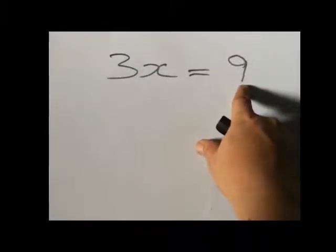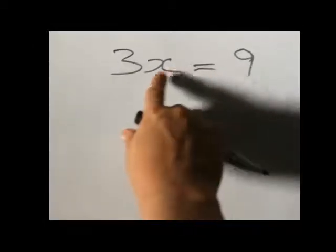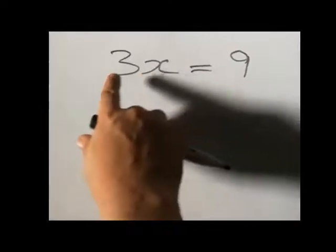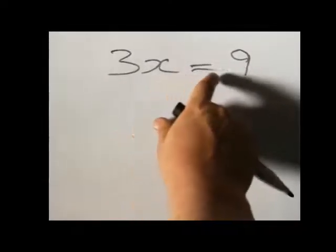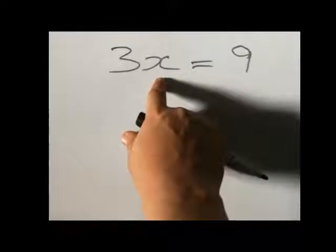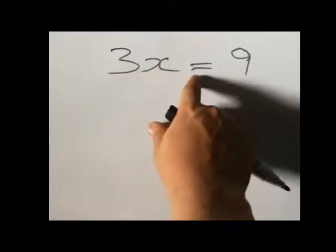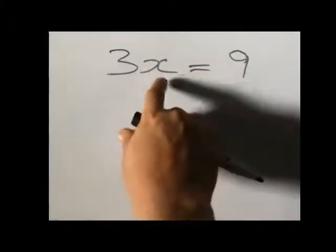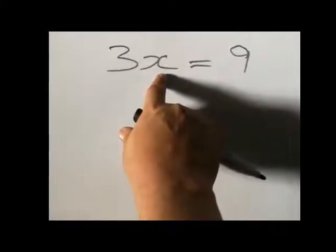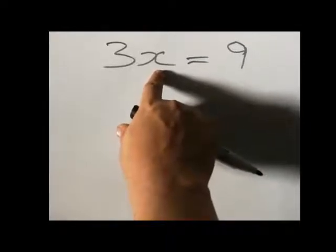When you do 3 times 1, it gives you 3, so x is not 1. When you do 3 times 2, it gives you 6, not 9, so x is not 2. When you do 3 times 3, it gives you 9. So x is 3. That is the layman's way of finding what x is.